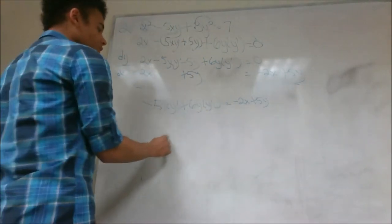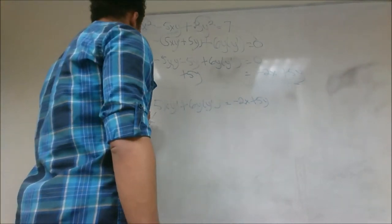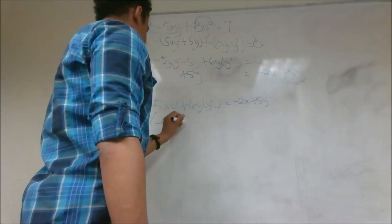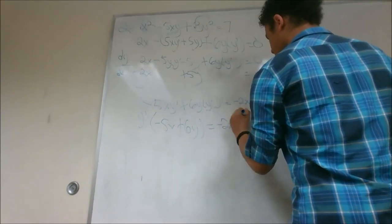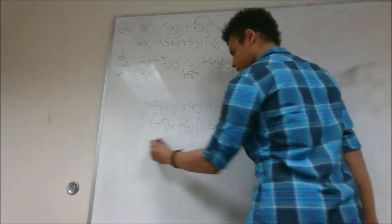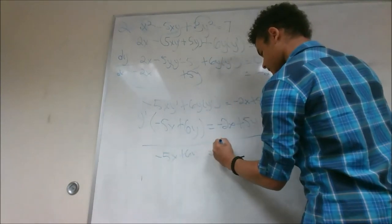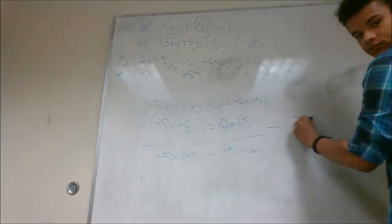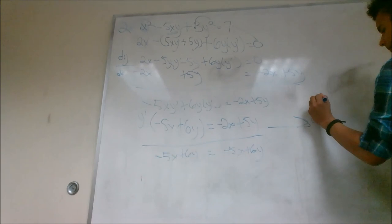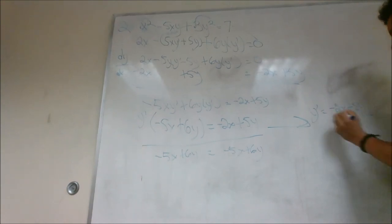Now we can factor. We'll take out the y prime from both of these. So we'll have y prime on the outside and in parenthesis we'll have negative 5x plus 6y equals negative 2x plus 5y. Now all we have to do is divide this by negative 5x plus 6y.